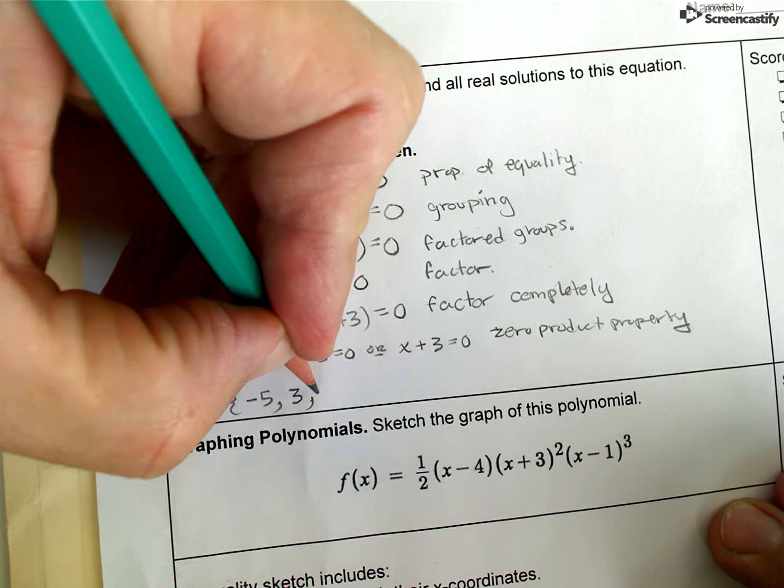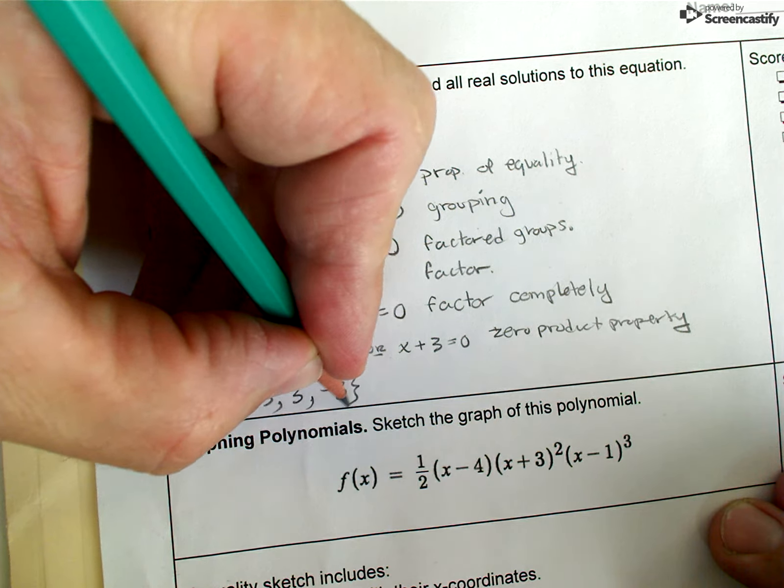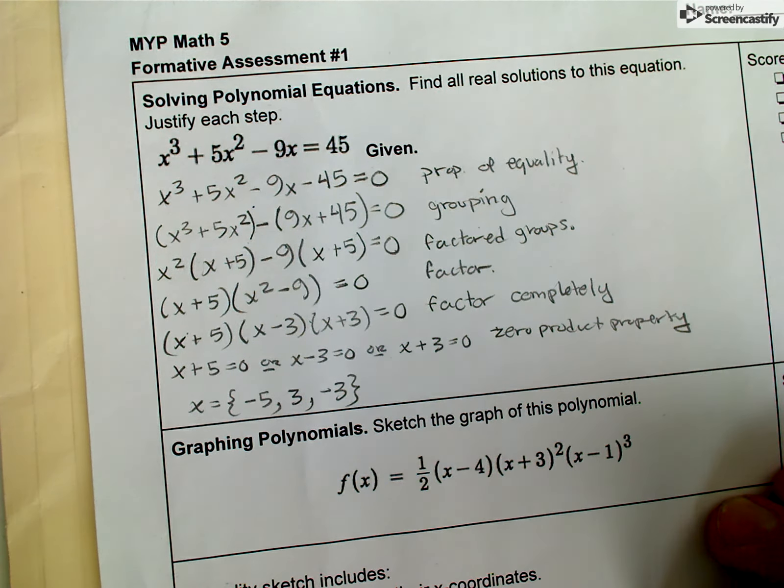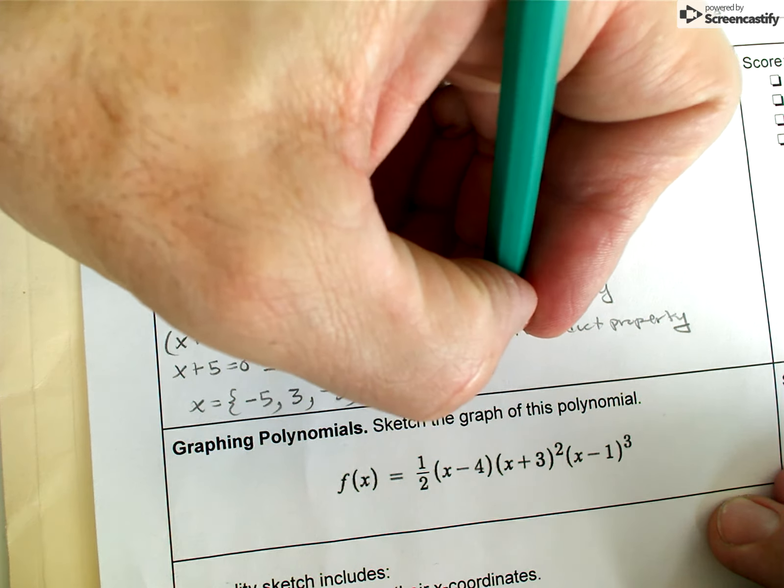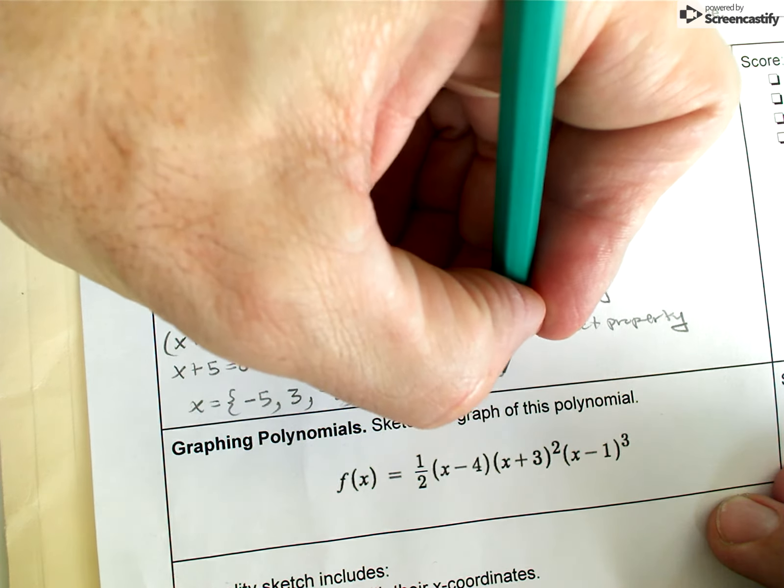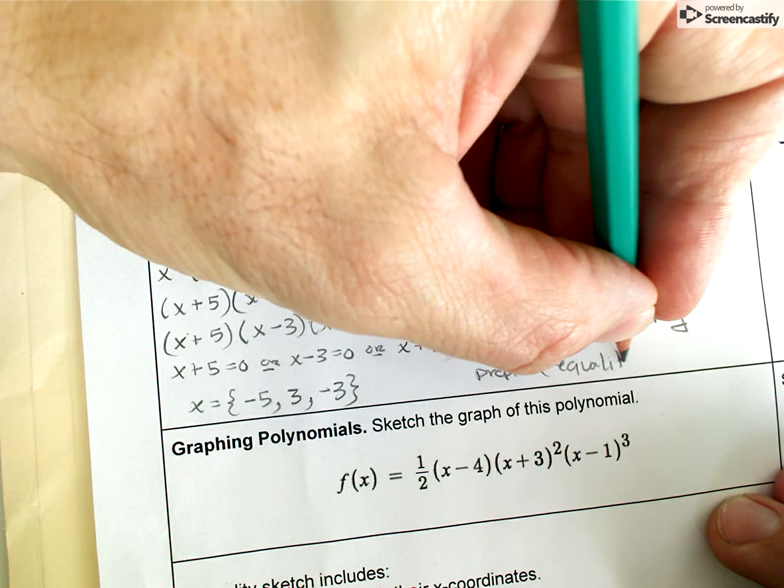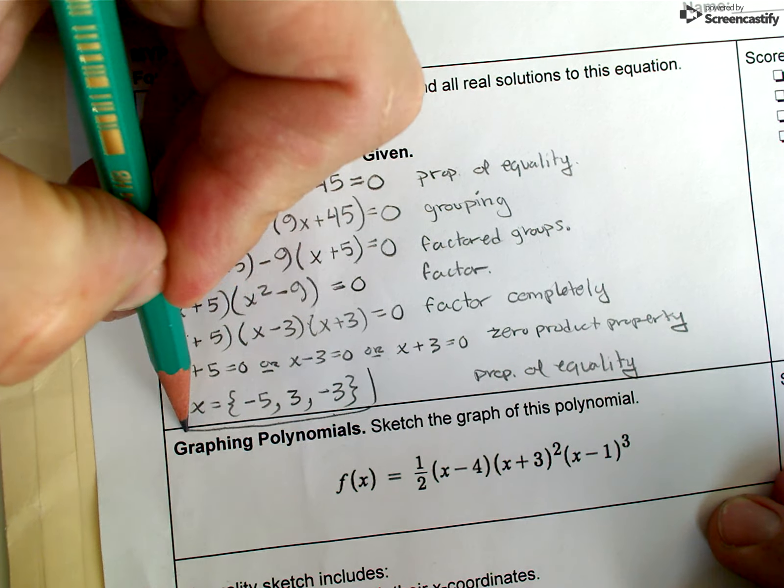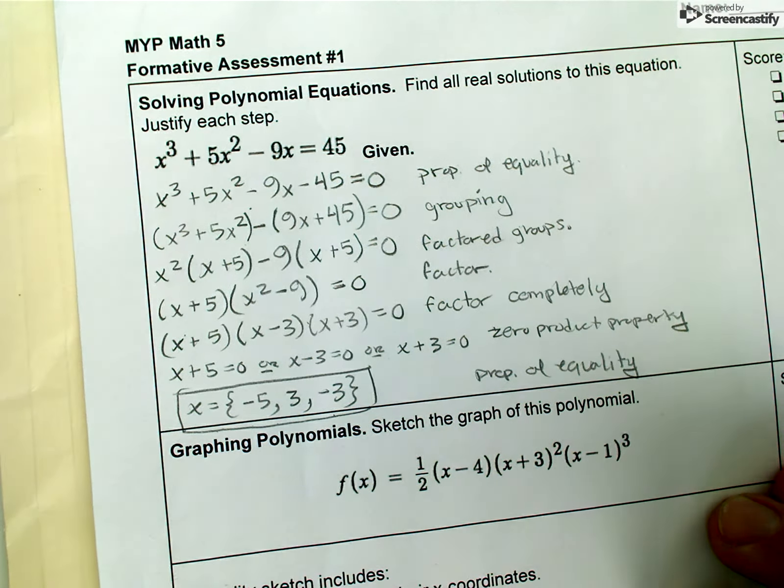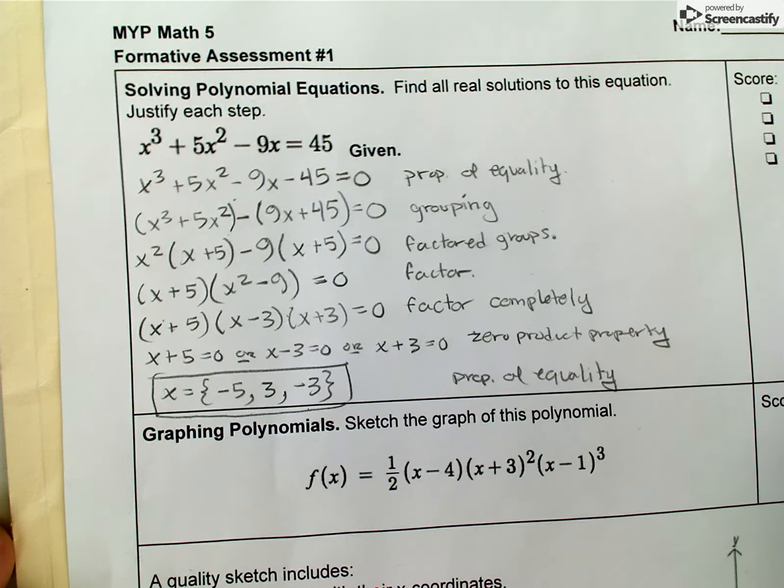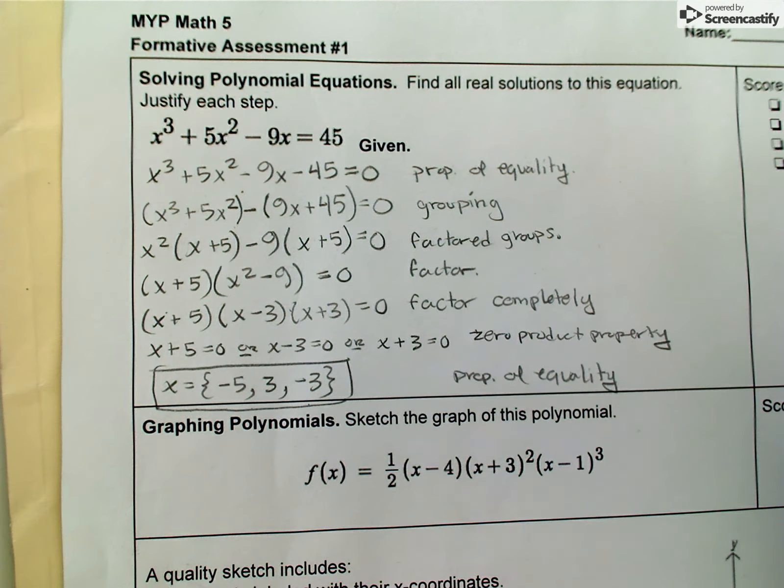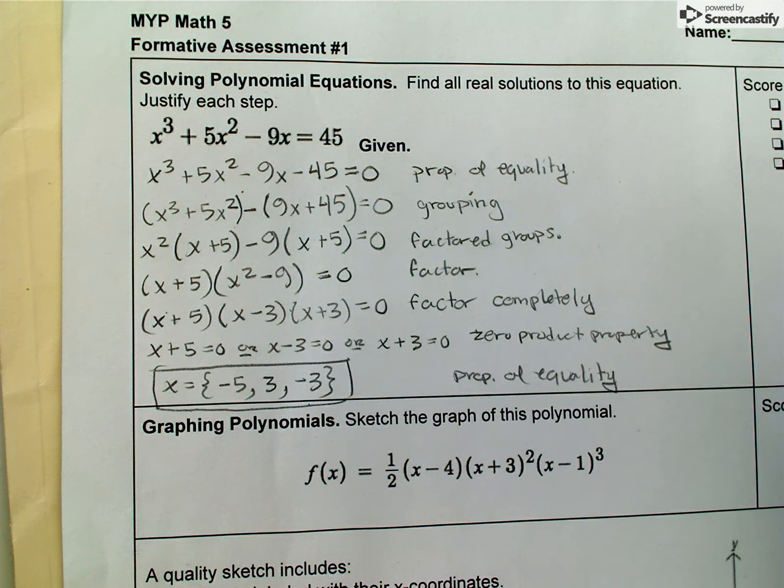I can very easily solve these three linear equations with the properties of equality. X is equal to negative five, three, or negative three. That is the set of real solutions right there, and I got that using the properties of equality. I might just put a box around my solution - there it is.